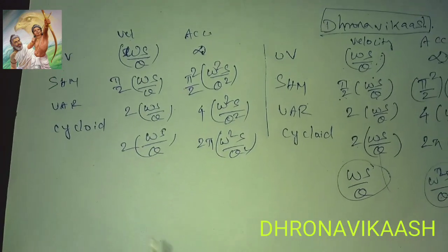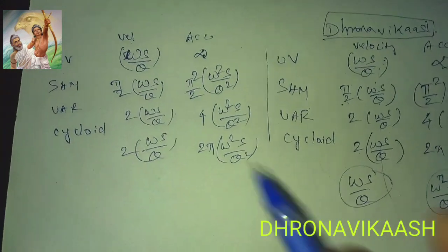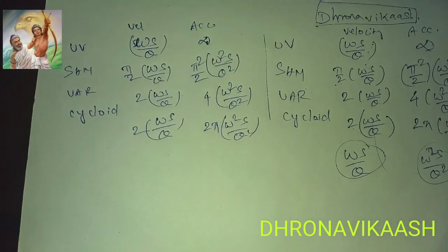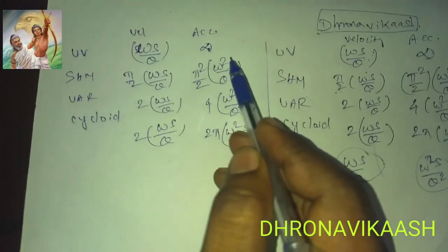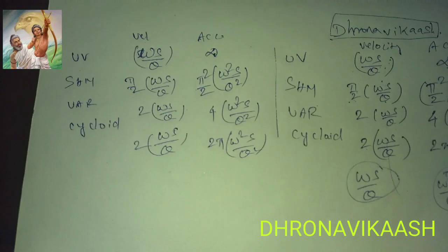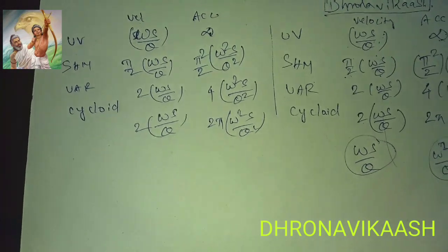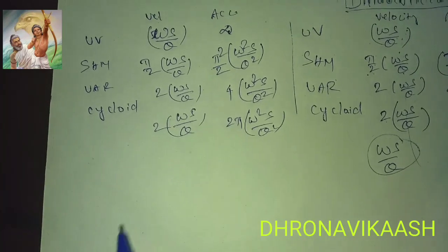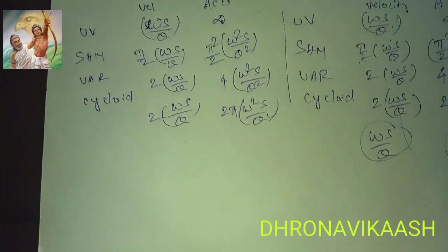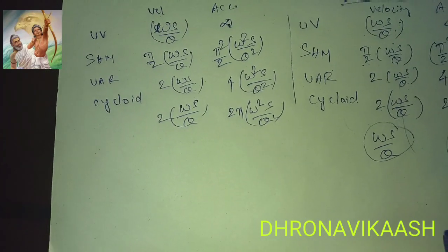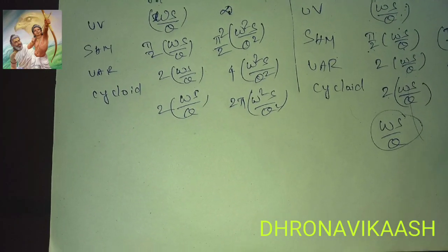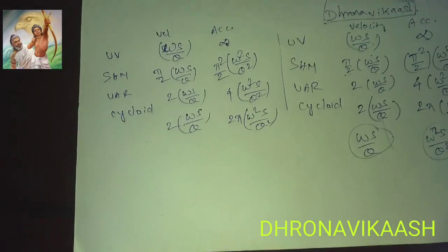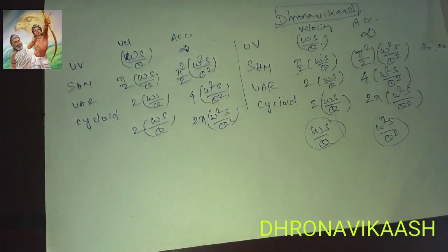Now this is uniform elastic, is simple harmonic motion. This is pi by 2, Uniform Acceleration is 2, 5 by 4, pi by 2, 2, 2. This is pi by 2, so pi is square by 2. This is UAR, 2 is square by 4. This is 2 pi. Pi by 2, 1 is square by 4.